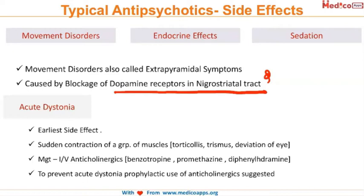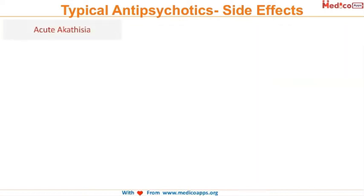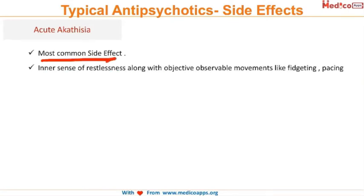Management of acute dystonia is generally via IV anticholinergics like benztropine, promethazine, and diphenhydramine. To prevent acute dystonia, many patients will be started on anticholinergics along with the antipsychotics.